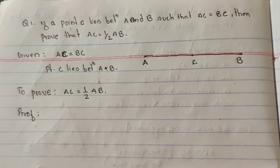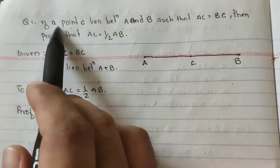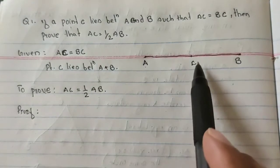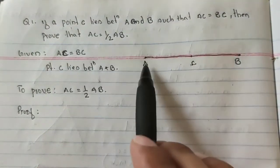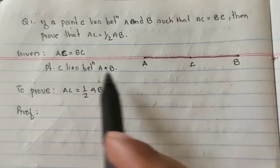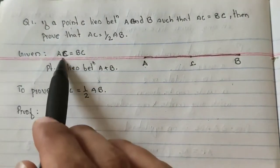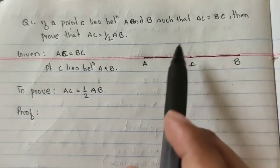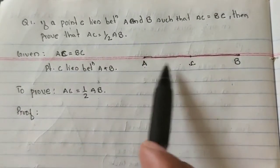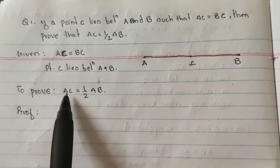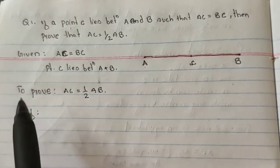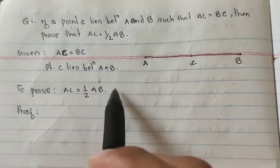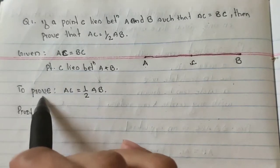Today we will only solve the questions which are given in our textbook, Exercise 5.1. This is the first question: if a point C lies between A and B such that AC is equal to BC, then you need to prove that AC is half of AB. So friends, here the given is AC is equal to BC, and point C lies between A and B. To prove, we need to prove that AC is half of AB.